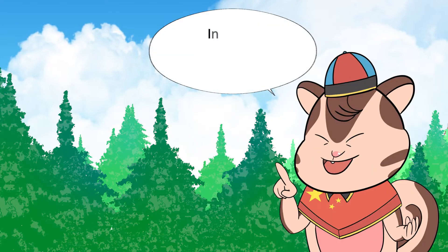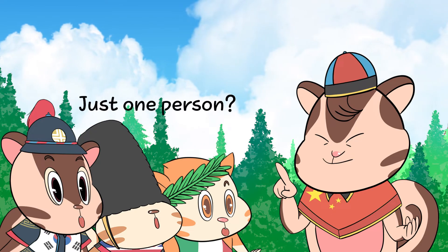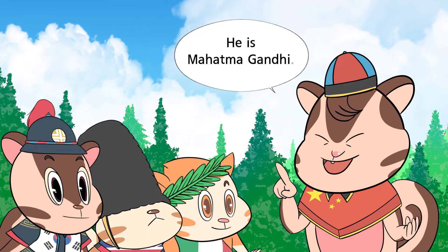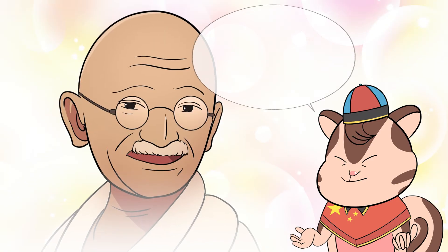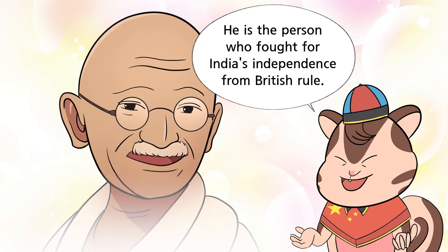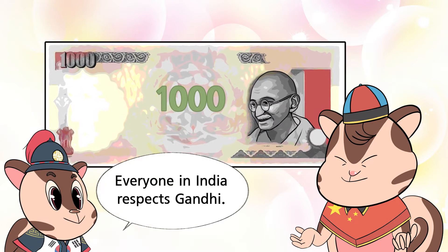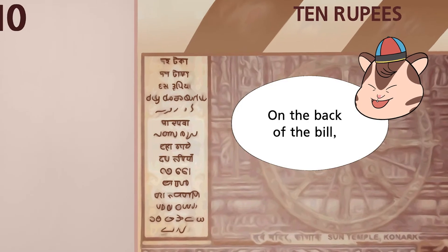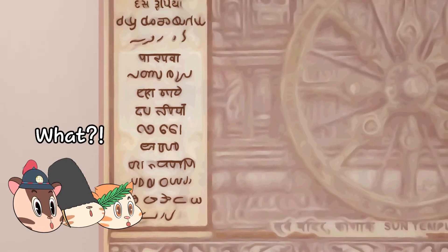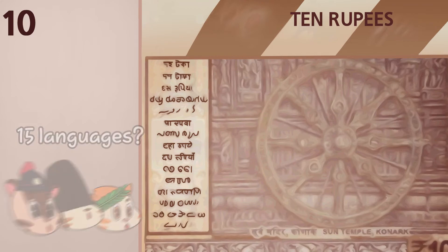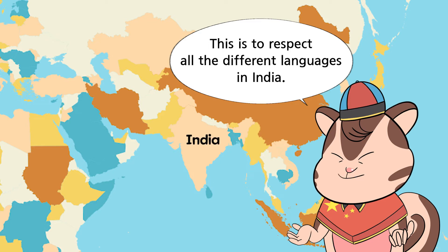Yes, you're right. In India, there is only one person on the bills. Just one person? Who is it? He is Mahatma Gandhi. Gandhi is the person who fought for India's independence from British rule. Everyone in India respects Gandhi. On the back of the bill, the amount is written in 15 languages. This is to respect all the different languages in India.